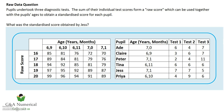Hi there, this is Andy from GNA Numerical. This is a very short demonstration video on a question that's been causing lots of pupils a headache for the QTS numeracy skills test — it's the raw data question. A student of mine just today was telling me about being asked one of these questions. Pupils undertook three diagnostic tests; the sum of their individual test scores forms a raw score, which can be used together with the pupil's age to obtain a standardized score. The question being asked is: what was the standardized score obtained by Jess?